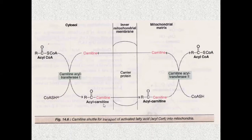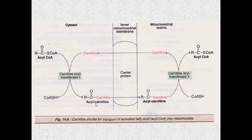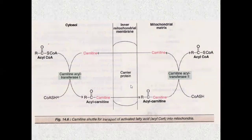So acyl-CoA is converted to acyl-carnitine, and the released coenzyme A is free to attach to another fatty acid for activation. Now the acyl-carnitine will be transported inside the mitochondrial matrix via a special transport protein. Because the inner mitochondrial membrane does not allow passage of activated fatty acid, the acyl-carnitine is transported through this specific carrier protein — a translocase.